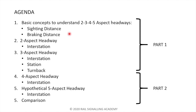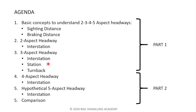To begin with, we'll be talking about some basic concepts to understand two, three, four, and five aspect headways — including sighting distance and braking distance. I won't go into too much detail but I'll explain what these distances mean, which is very important to understand the full picture of headway. Then we'll cover two aspect headway and three aspect headway, where I'll go into much more detail, covering not just interstation but also station and turn-back headway.